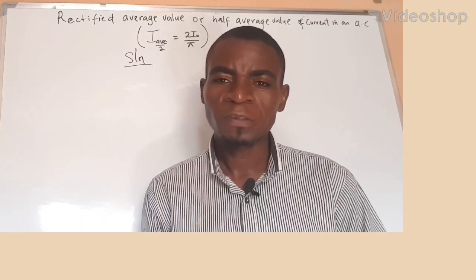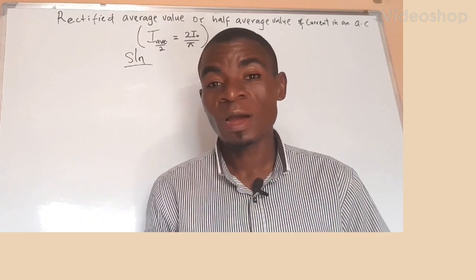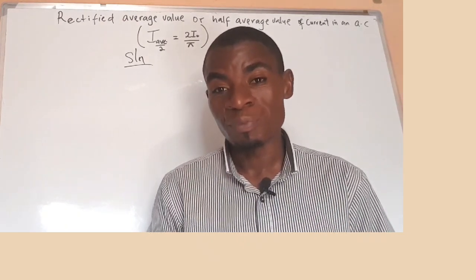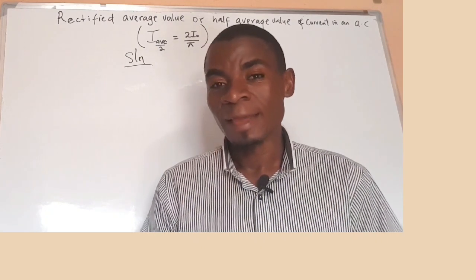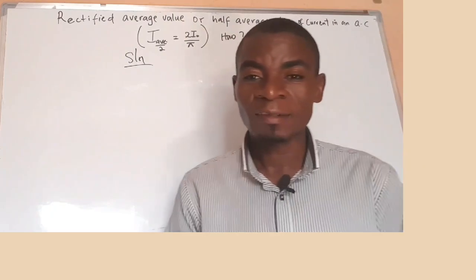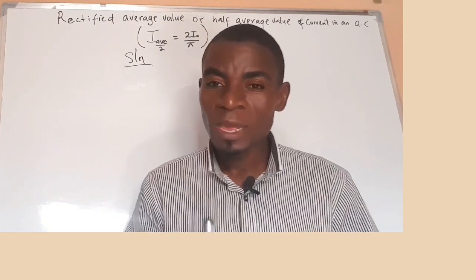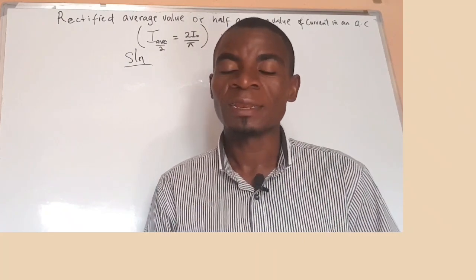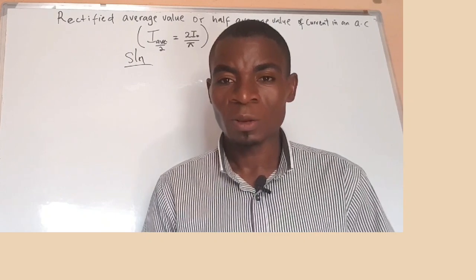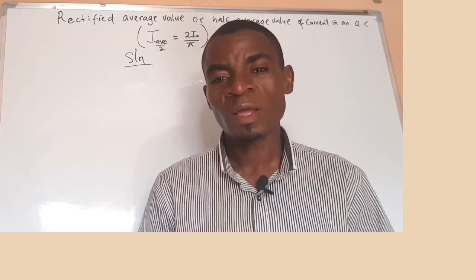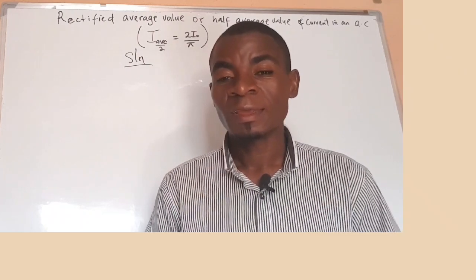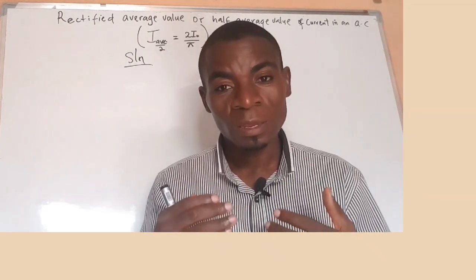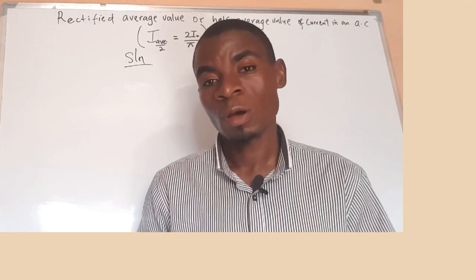Hello viewers, welcome to my channel. In my previous video, I discussed about the average value of an AC circuit being equal to zero, and the average value of current in an AC circuit is equal to zero. Today we'd like to look at the half average value of current in an AC circuit — that is, students normally receive the answer from their teachers that it is equal to 2I₀ over π.